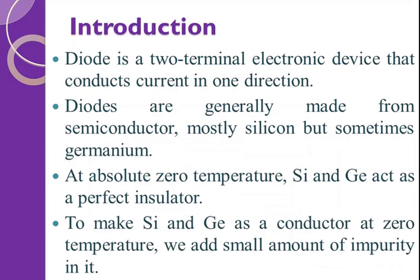Diode is a two-terminal electronic device that conducts current in one direction only. Diodes are generally made from semiconductor material, mostly silicon, but sometimes we also use germanium.